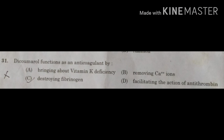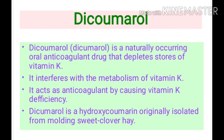The question is: dicoumarol functions as an anticoagulant by — option A: bringing about vitamin K deficiency; option B: removing calcium ions; option C: destroying fibrinogen; and option D: facilitating the action of antithrombin. Let us understand the term dicoumarol in brief.